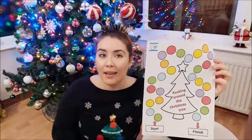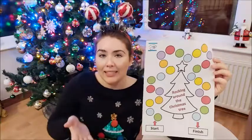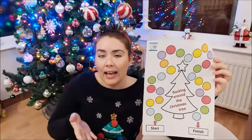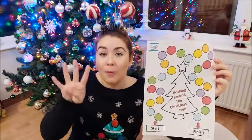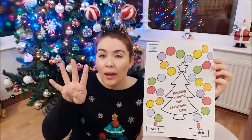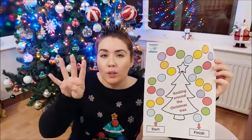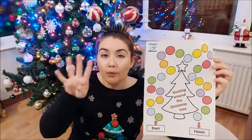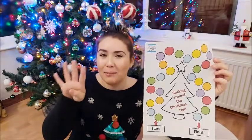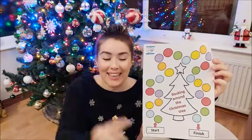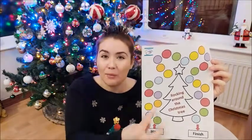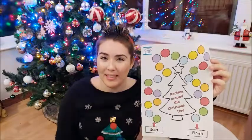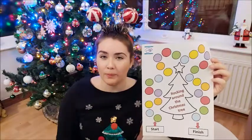So if I rolled my dice and I got the number four, I would do my target practising four times, and once I've done my four practices I can then move four spaces up.